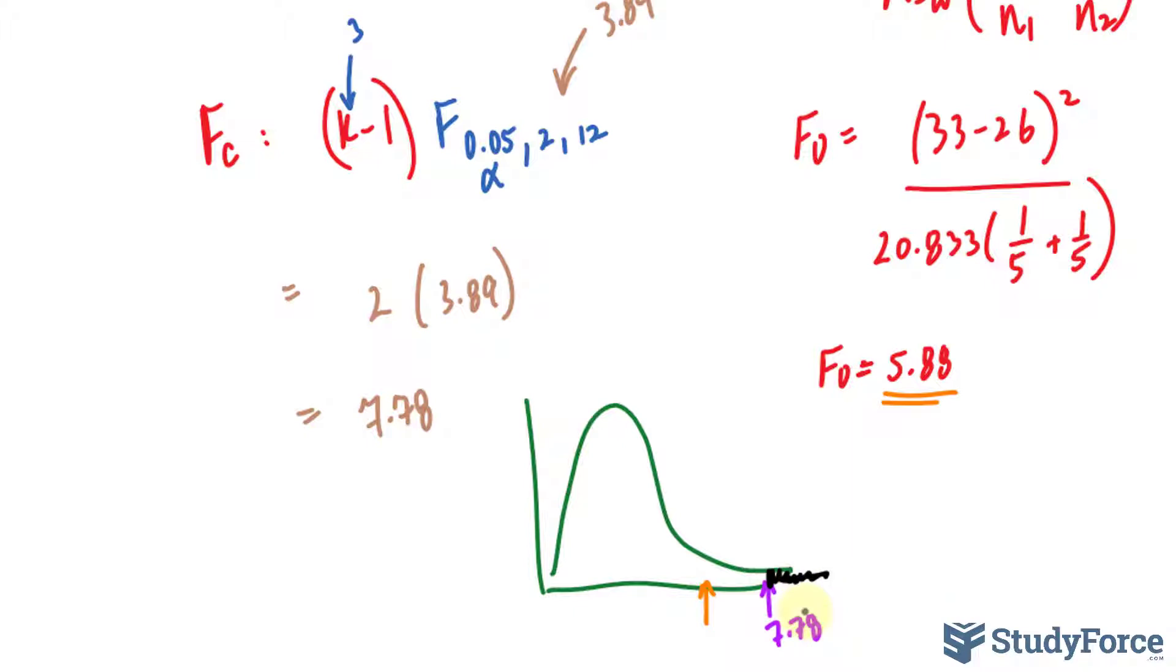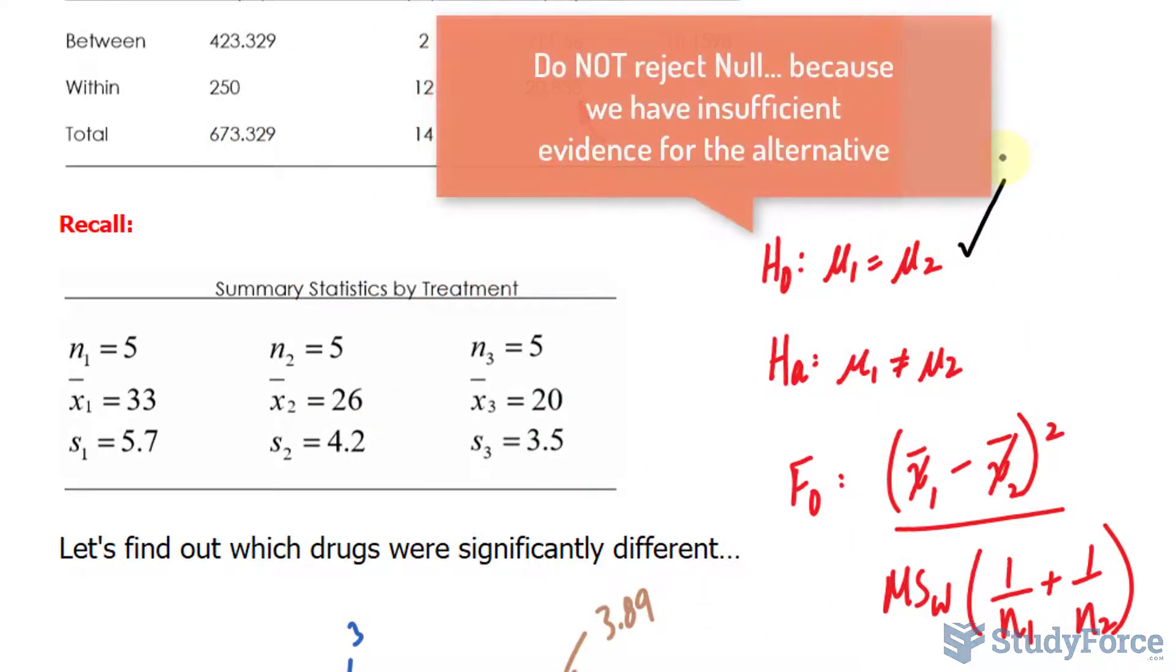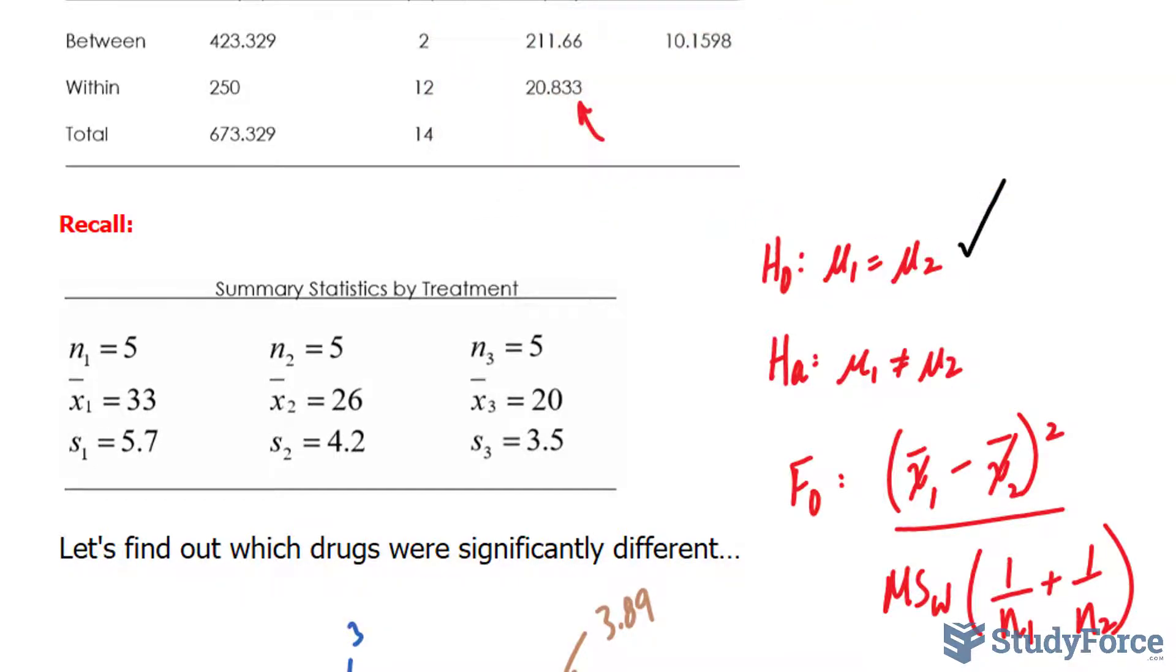Therefore, we do not reject the null hypothesis. We accept it. In other words, we have insufficient evidence at 0.05 to conclude that the averages for those that were administered drug A and drug B were different.